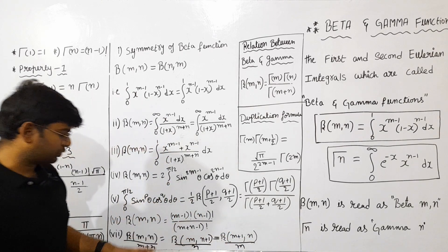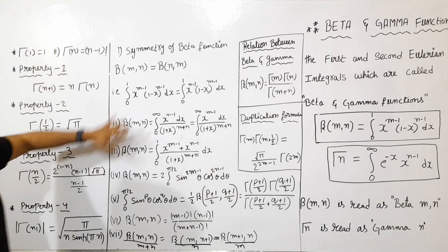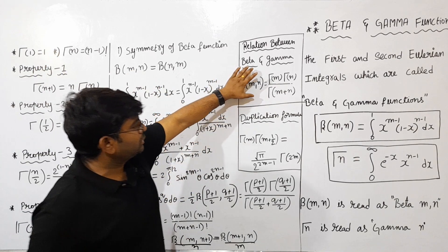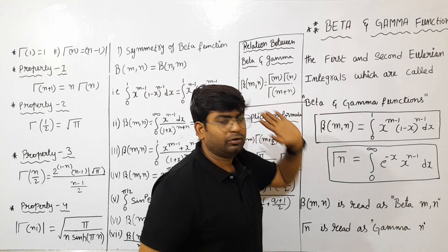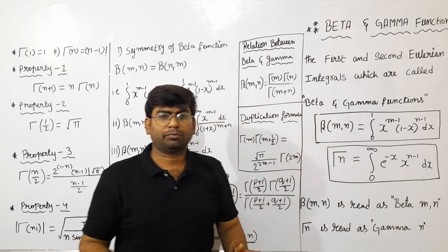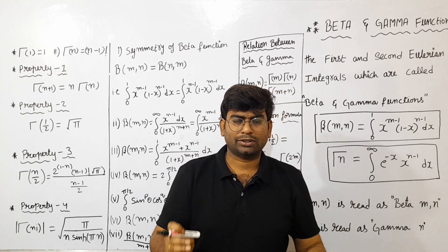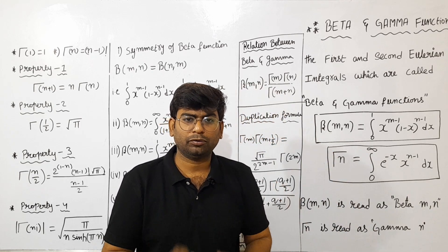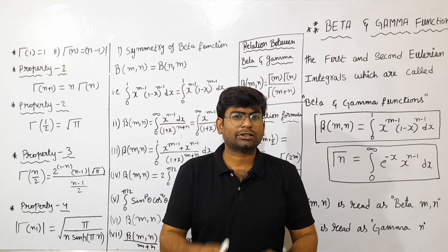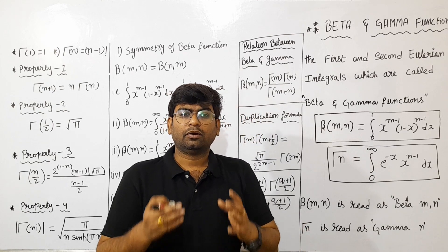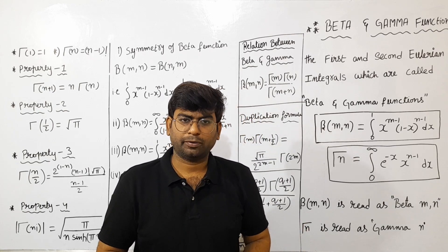So that means: Gamma, Beta, their relationship, duplication, and basics — these are the main coverings of Beta and Gamma. Why do you need these basics? Like and subscribe. In the description, there are some questions on these topics. All the best.